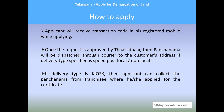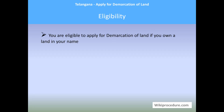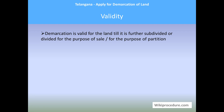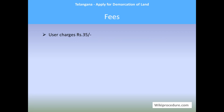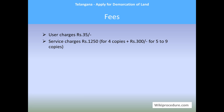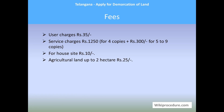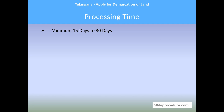Eligibility: you are eligible to apply for demarcation of land if you own a piece of land in your name. Validity: demarcation is valid for the land until it is further subdivided or divided for the purpose of sale or partition. Fees: user charges are rupees 35; service charges are rupees 1,250 for 4 copies, plus rupees 300 for 5 to 9 copies. For a house site, rupees 10 will be collected. For agricultural land up to 2 hectares, rupees 25; between 2 and 4 hectares, rupees 50.